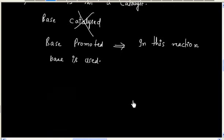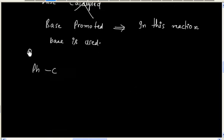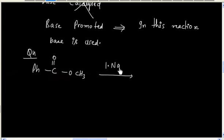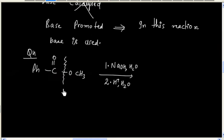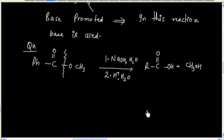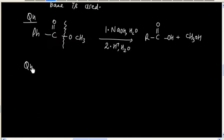Let us say if I ask: what will be the product in this reaction? In the first step we have NaOH in aqueous medium, and in the second step we have mineral acid. This is hydrolysis, so we have to break this bond, and we will have acid plus alcohol.